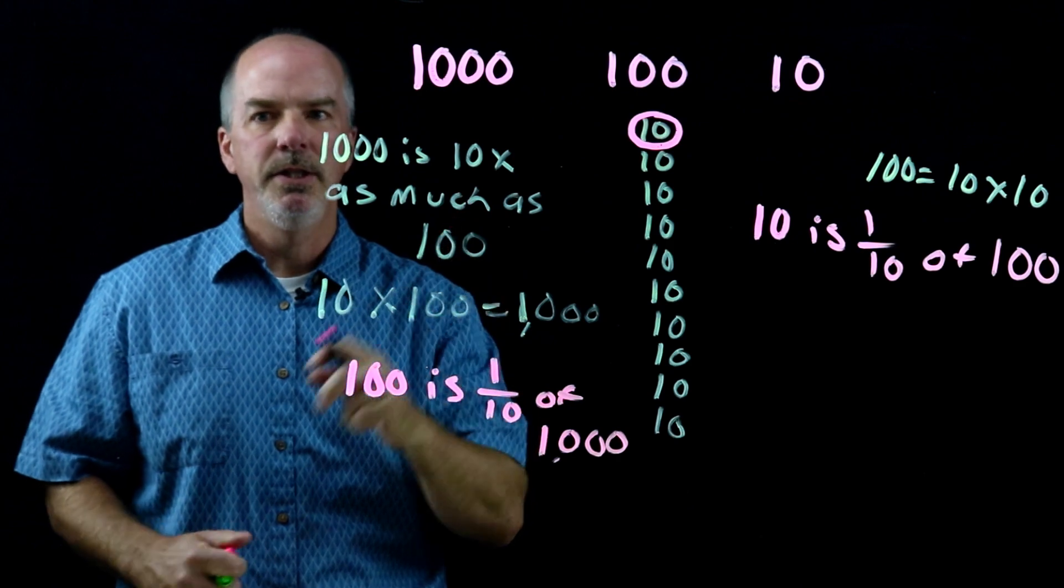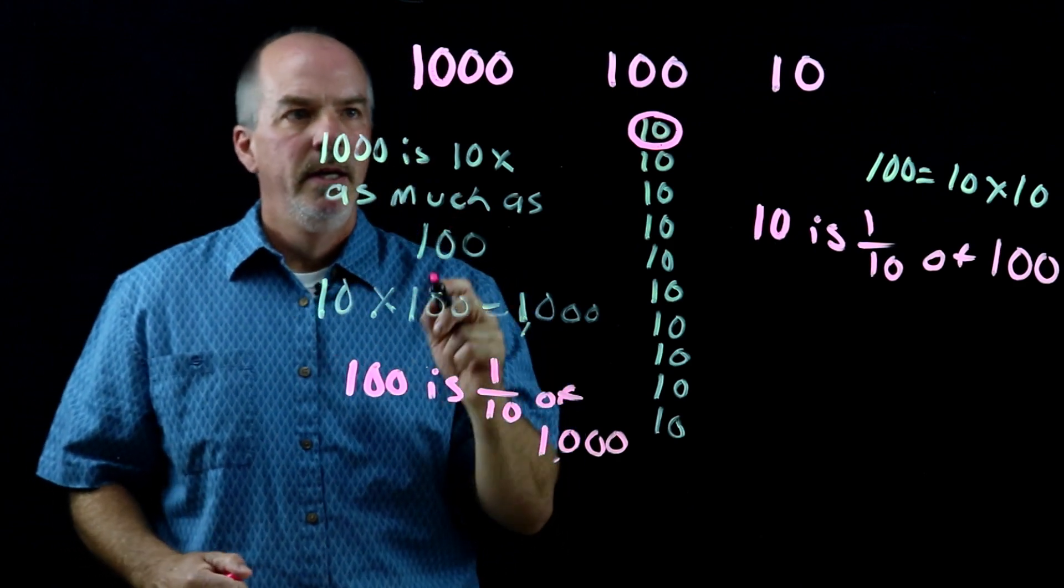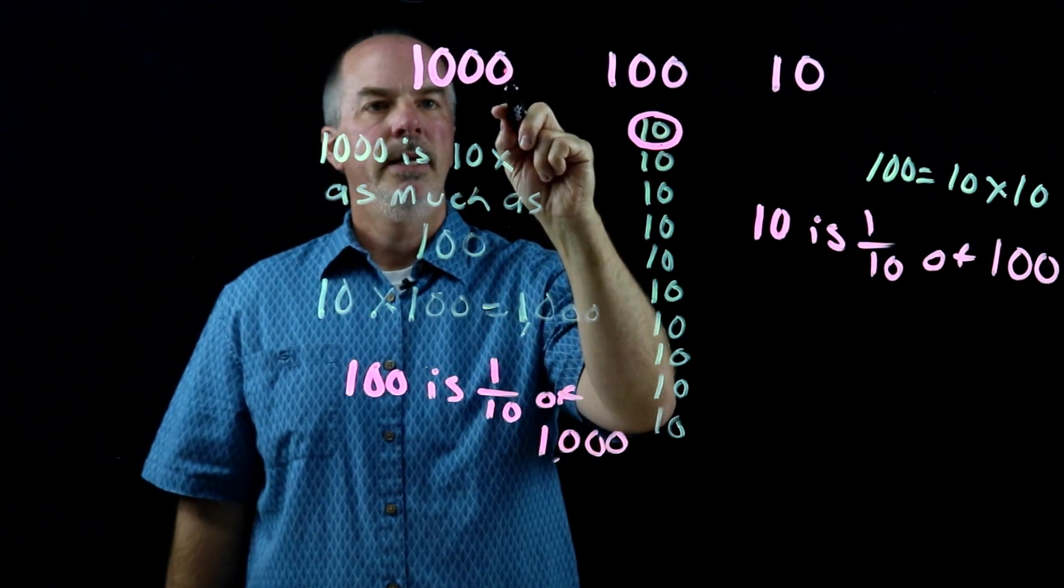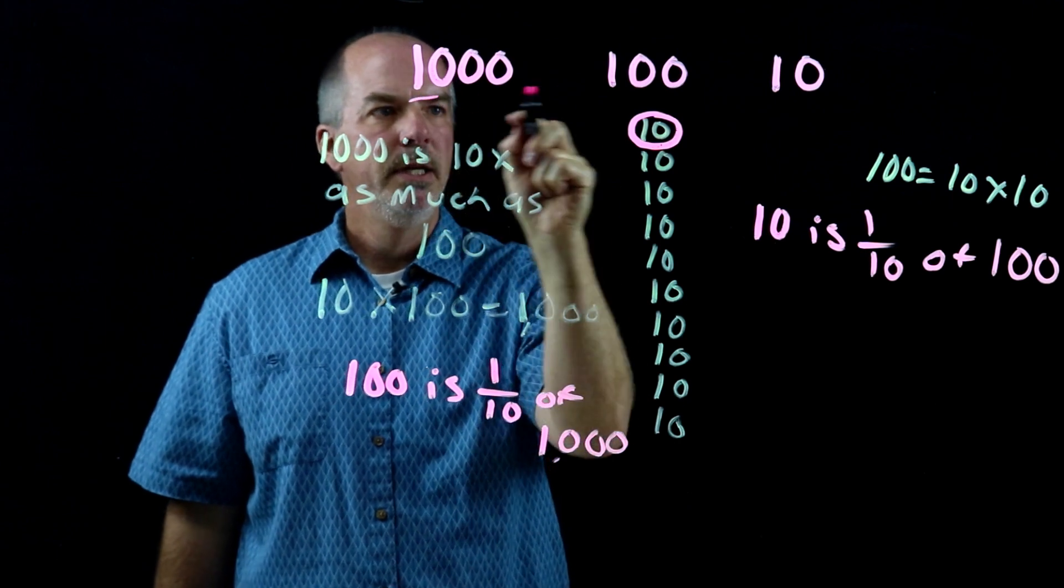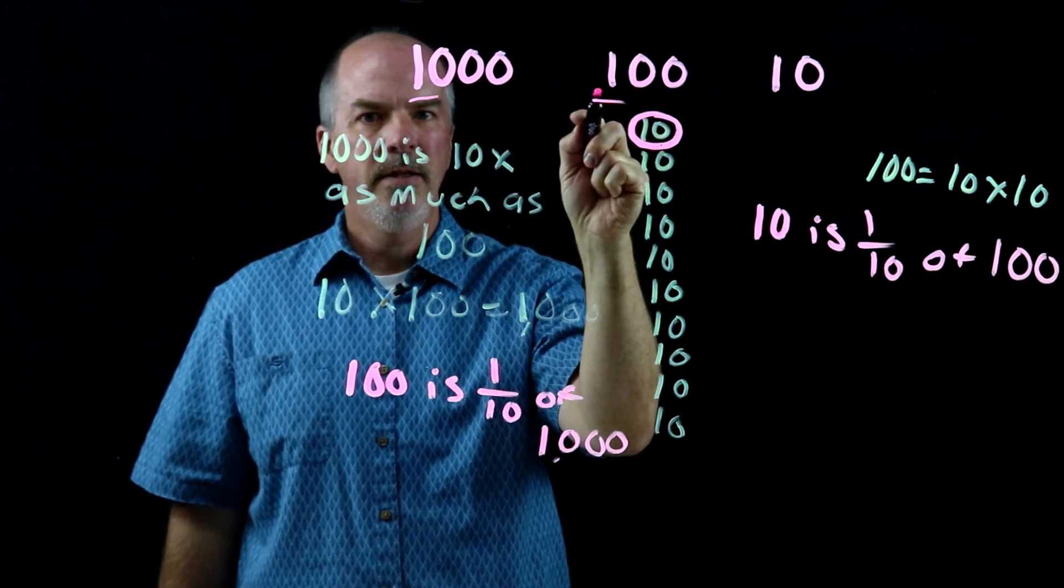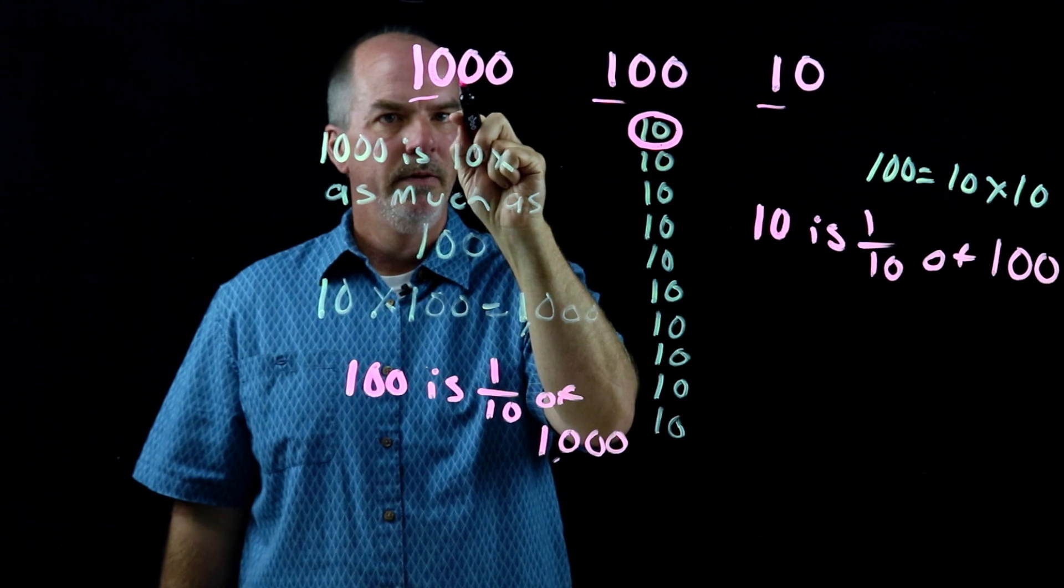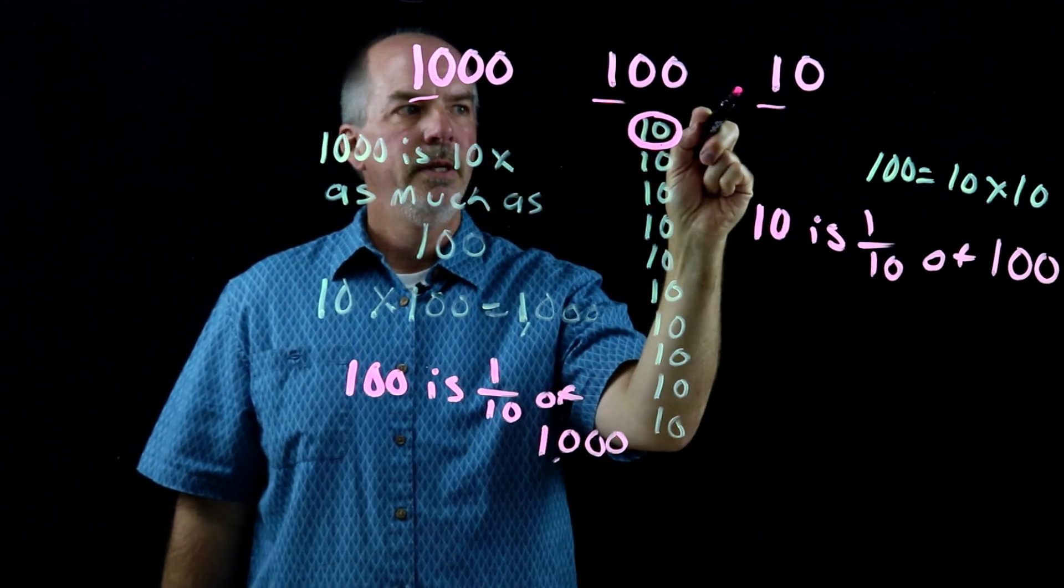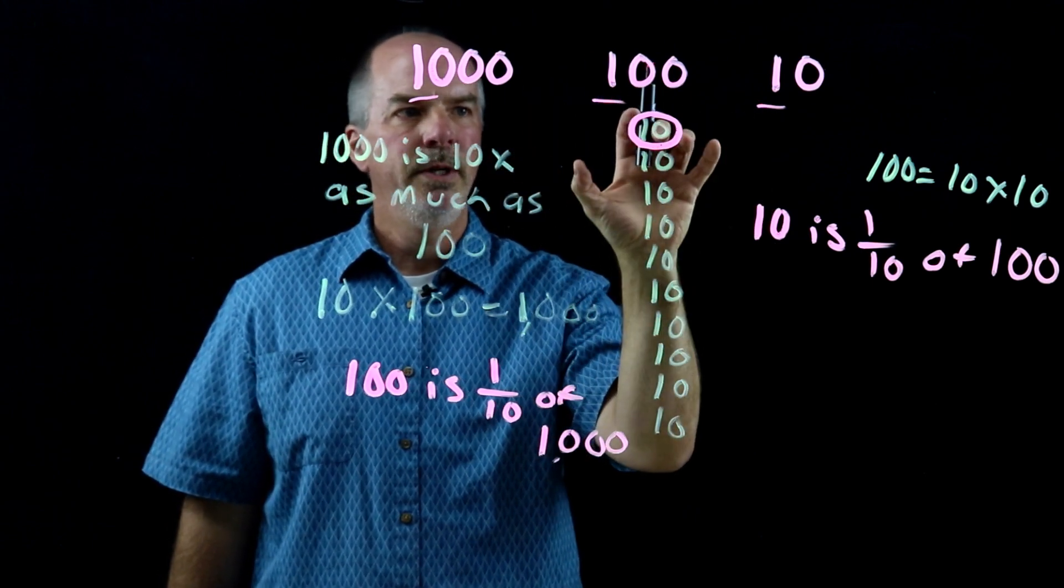So we've written four facts using the standard, demonstrating that if we move one position to the right, it's one-tenth the value. We did that from one-thousand to one-hundred to ten. Each time we're going down one-tenth.